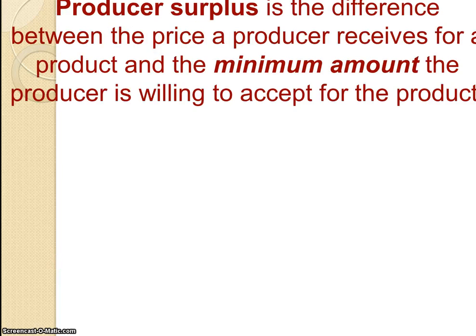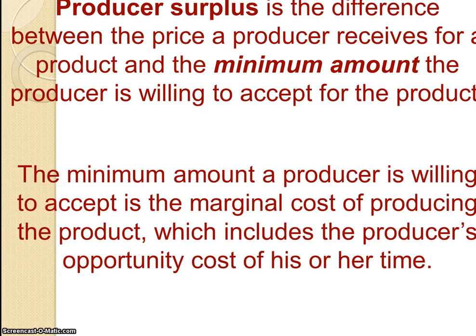Producer surplus is a similar concept. It's the difference between the price a producer receives for a product — the price they're selling it for — and the minimum amount they would have been prepared to accept for it. For example, if you're a producer prepared to accept $2 for a product, but the market price is $4 or $5, producer surplus would be the difference. Usually, the minimum amount would be the marginal cost of producing the product, because that includes the opportunity costs for the producer's time and various other things.